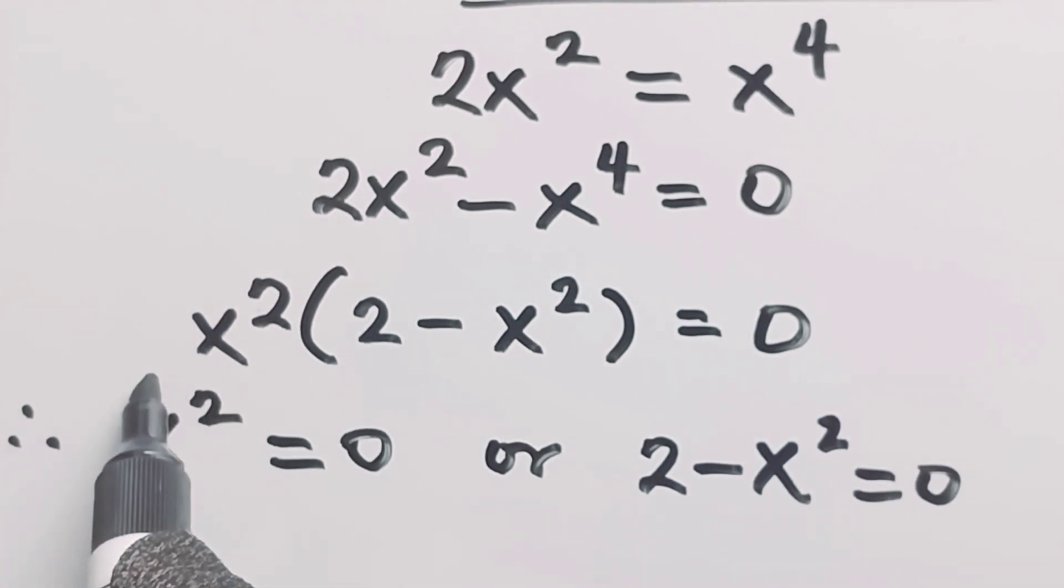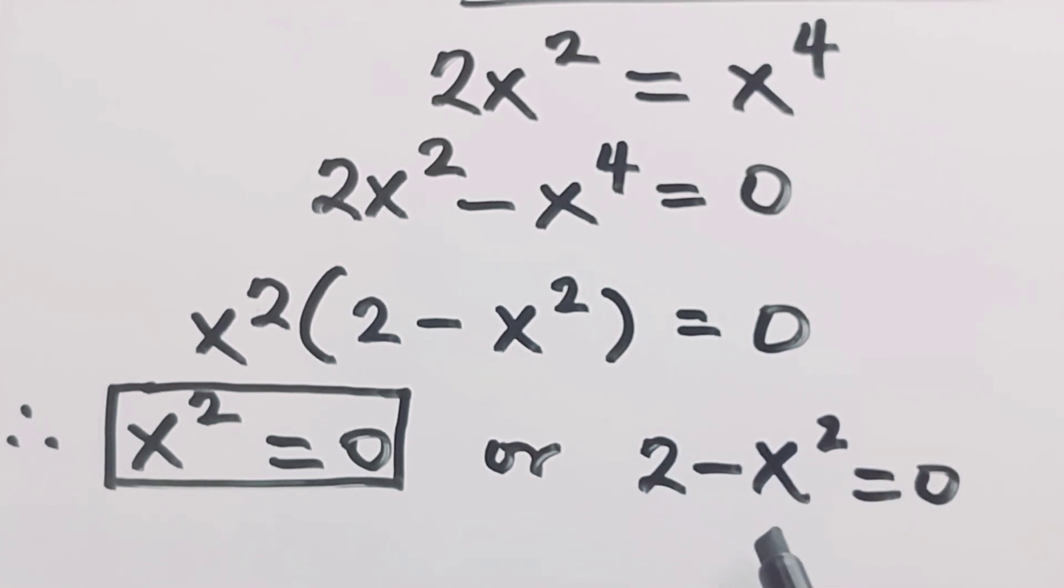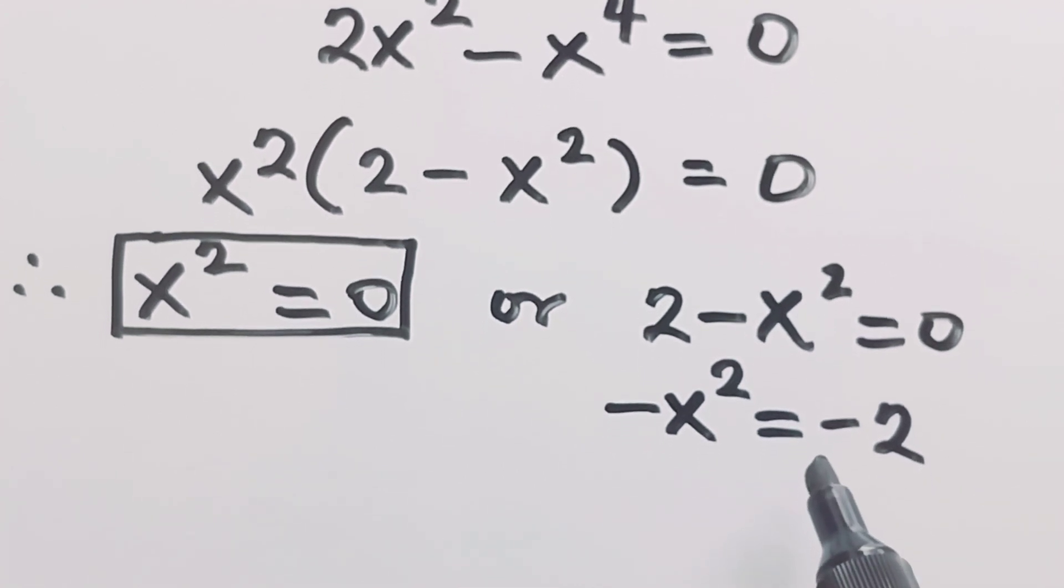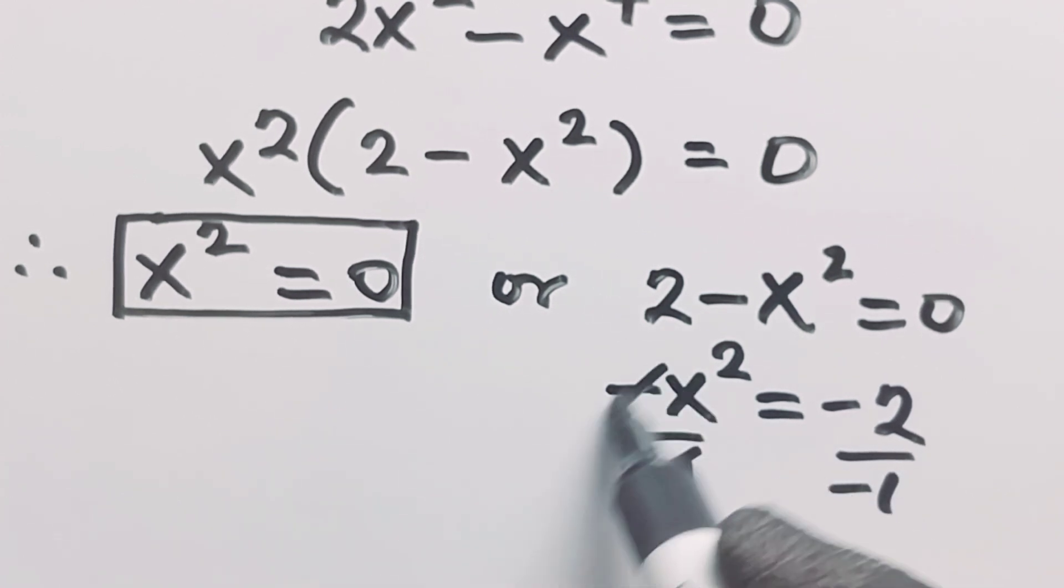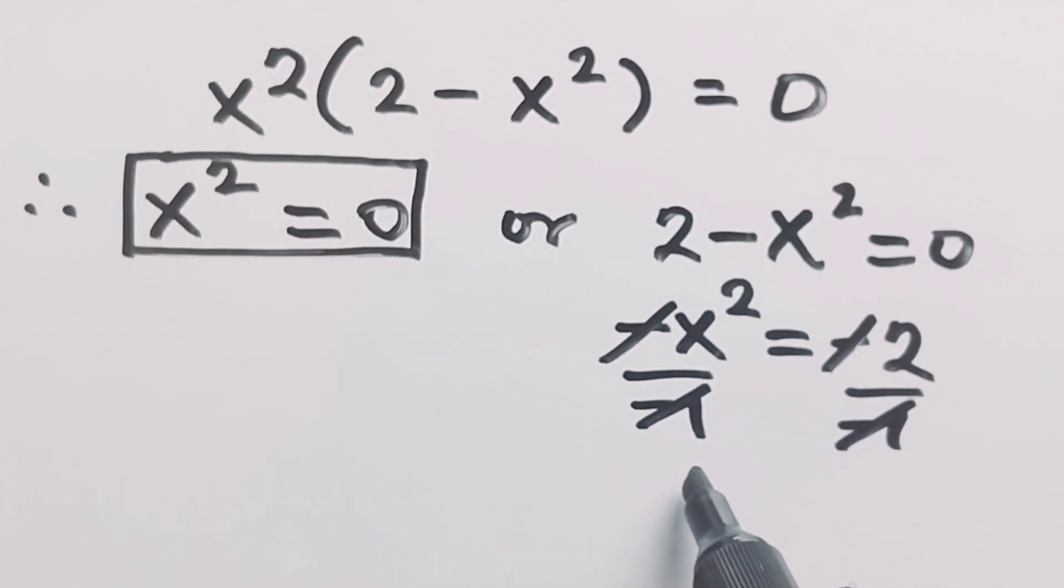So we need to solve this further. If we have 2 minus x squared, I can take 2 to the other side so that I have negative x squared is equal to negative 2. Then divide both sides by negative 1, so that we can say that x squared is equal to 2.